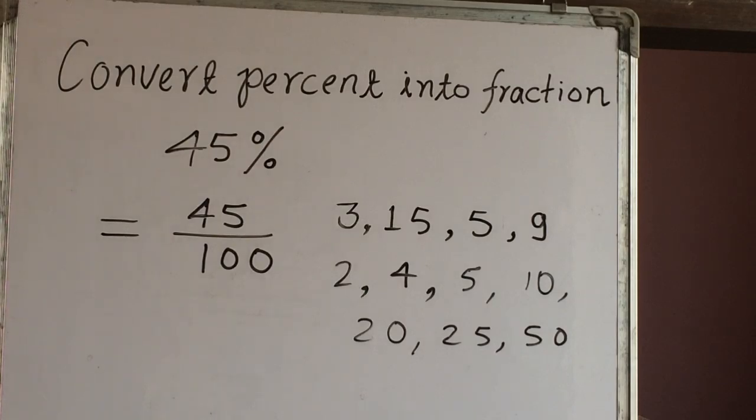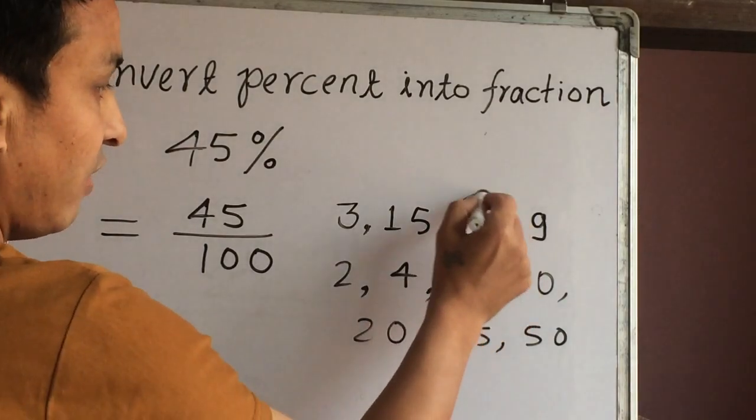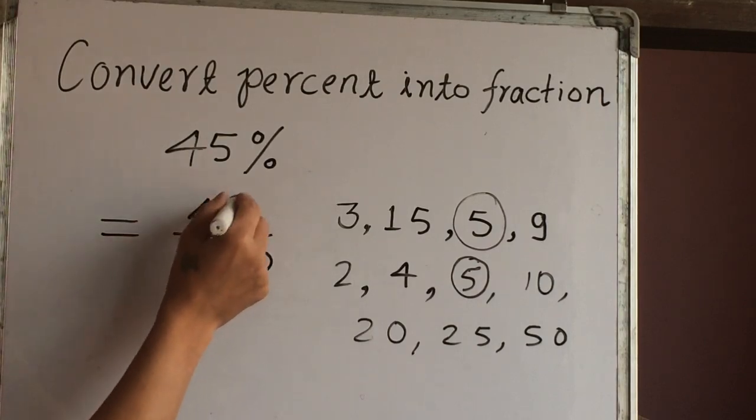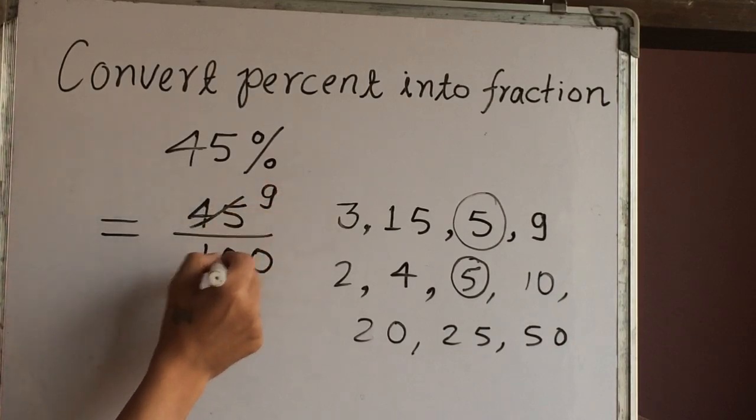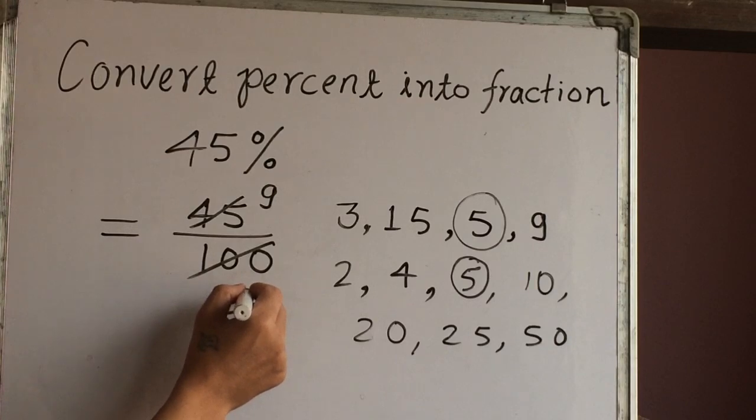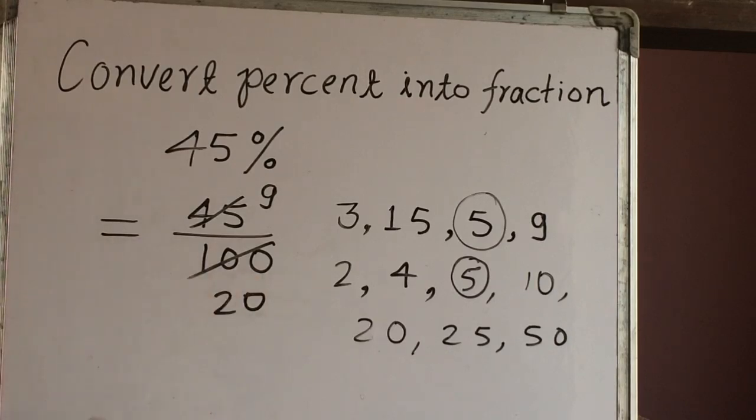So among these, the common number is 5. This 5 is the highest common factor, so we can reduce this fraction. 5 times 9 is 45, 5 times 20 is 100, which gives us 9 out of 20.